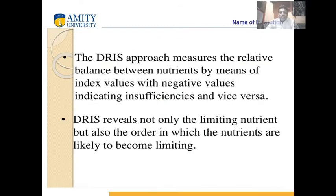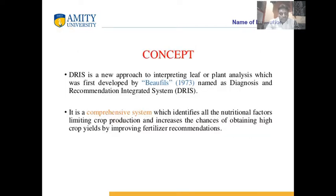This method describes a relative balance between nutrients by means of index values. The index values are either positive or negative. When the index is neither positive nor negative — that is, zero — it is considered best for yield potential. This reveals not only the limiting nutrients but also shows the order in which nutrients are becoming limiting.